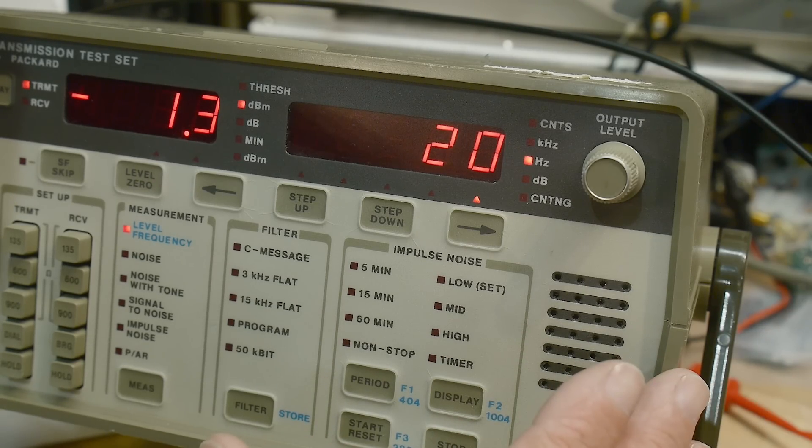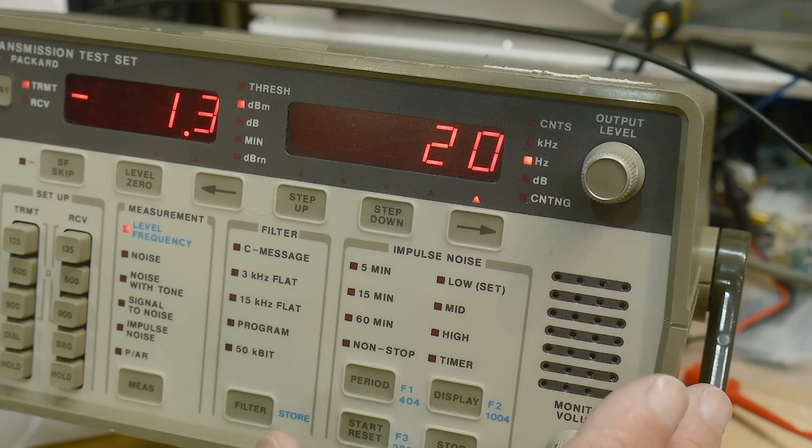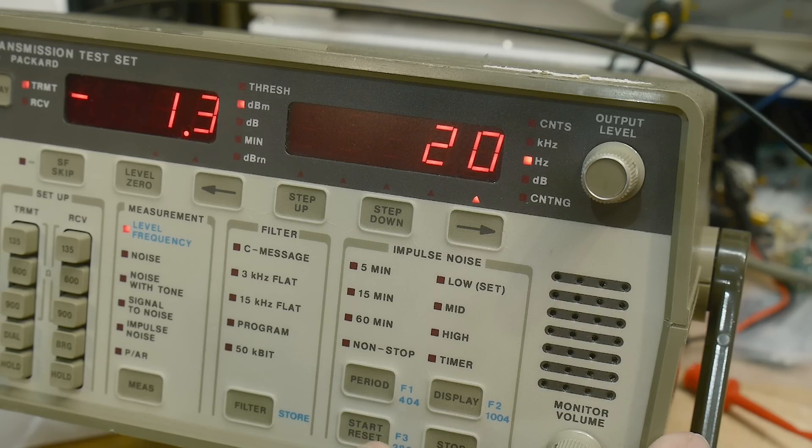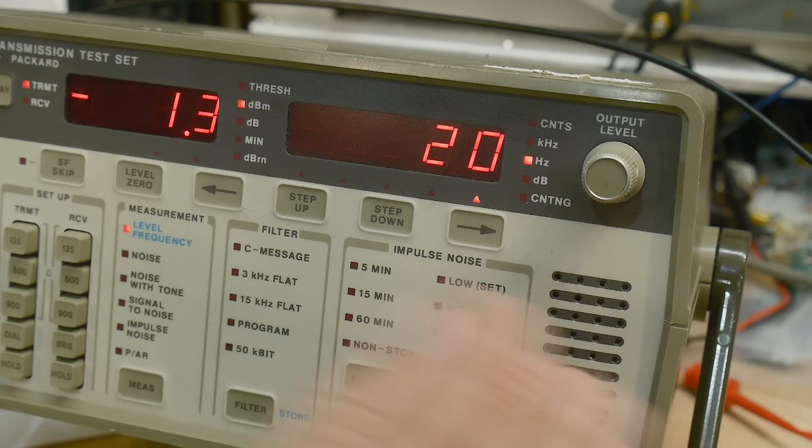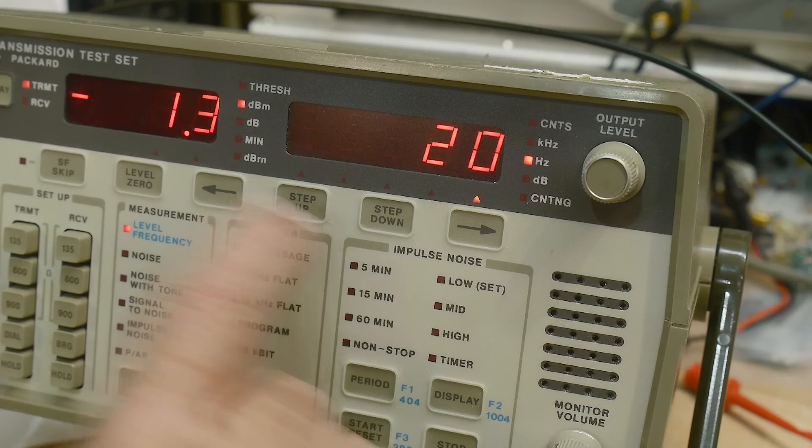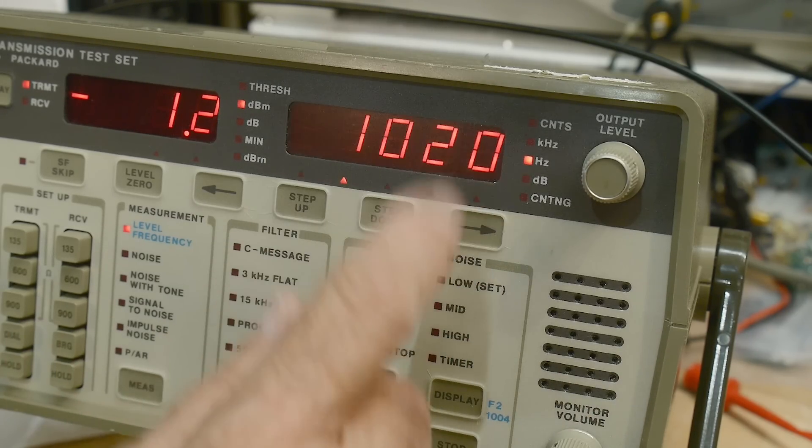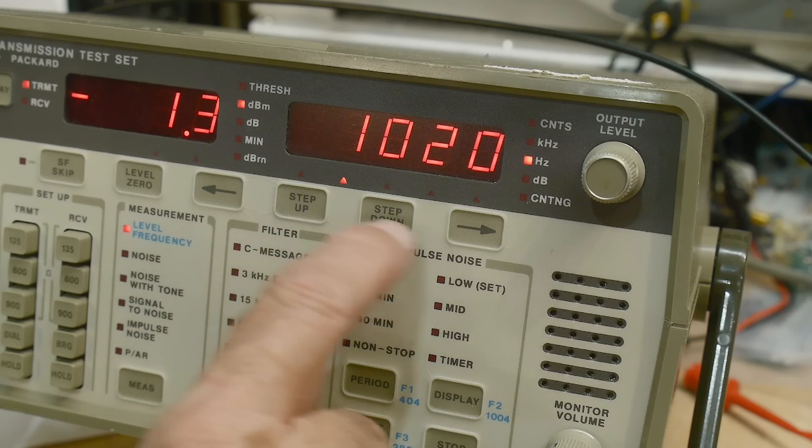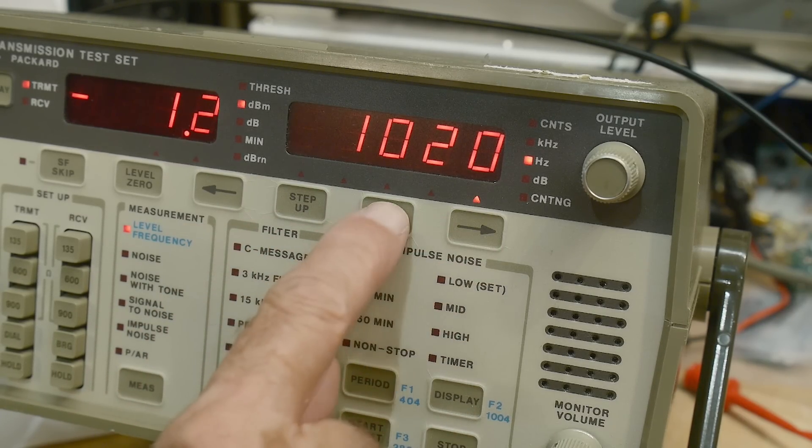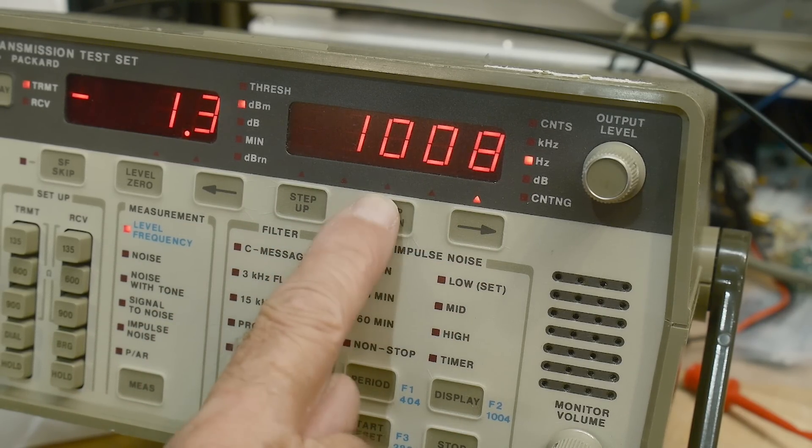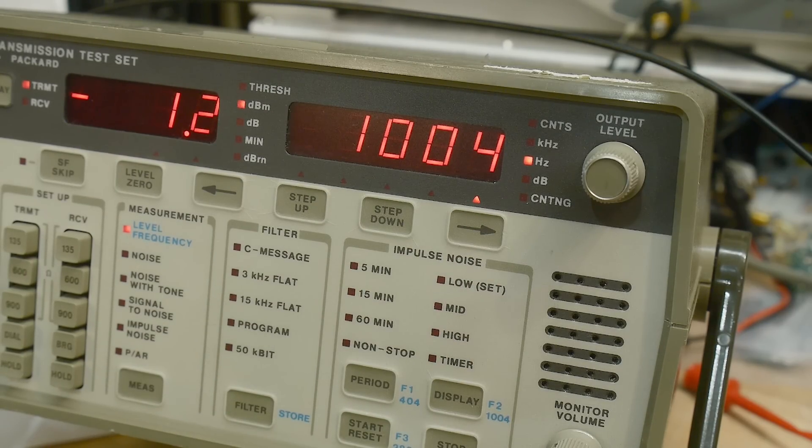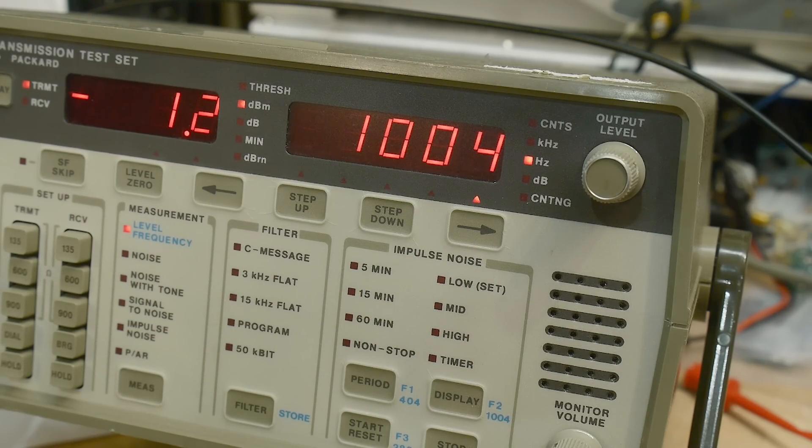We can change the amplitude from minus 40 to plus 13 dBm, so that's pretty cool. Let's go back up to thousand. You can make that tone—that's 1020. Let's see, let's go back over. We'll put it right where they like it, they like 1004.